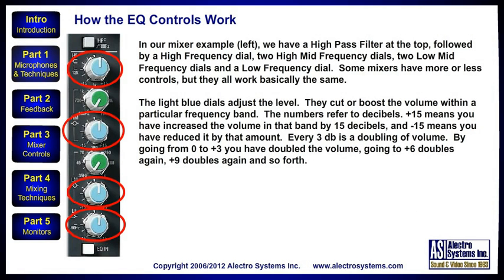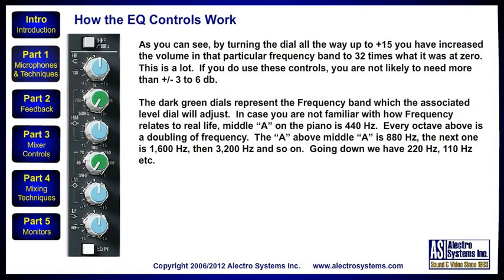The light blue dials adjust the level. They cut or boost the volume within a particular frequency band. The numbers refer to decibels. Plus 15 means you have increased the volume in that band by 15 decibels, and minus 15 means you have reduced it by that amount. Every 3 decibels is a doubling of volume. By going from 0 to plus 3, you have doubled the volume. Going to plus 6 doubles it again, plus 9 doubles it again, and so forth. By turning the dial all the way up to plus 15, you have increased the volume in that particular frequency band to 32 times what it was at 0.